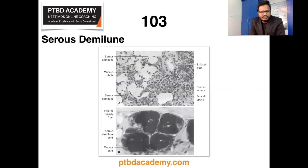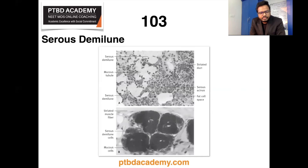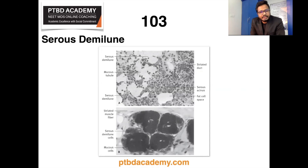As you can see, submandibular glands are mixed glands containing both serous and mucus secretory units. The serous units predominate, but the proportions may vary from one lobule to the next. The mucus terminal portions are capped by demilunes of serous cells, as you can see in this particular histologic image.